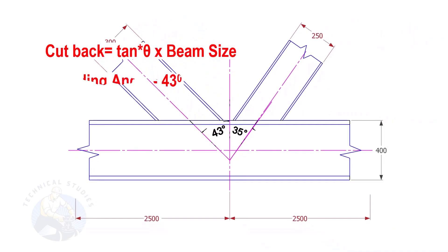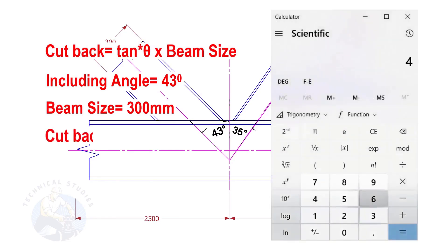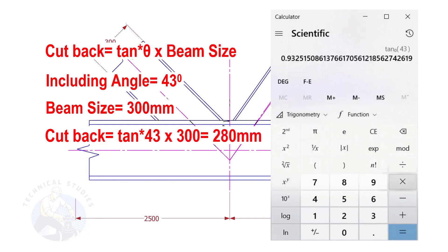If the including angle is 43 degree and the size of the beam is 300, the cutback is tan 43 into 300. The answer is 279.7. Let us write it as 280 millimeters.